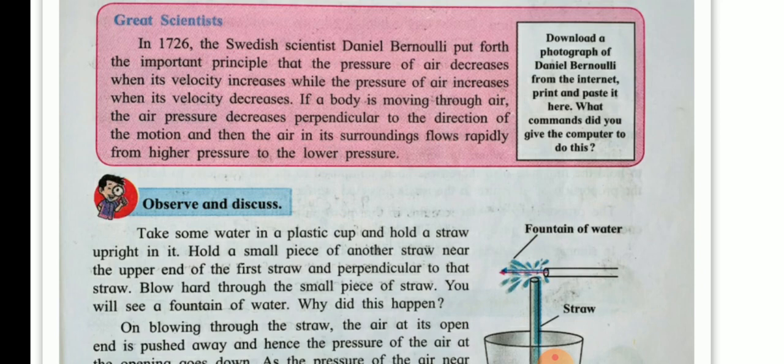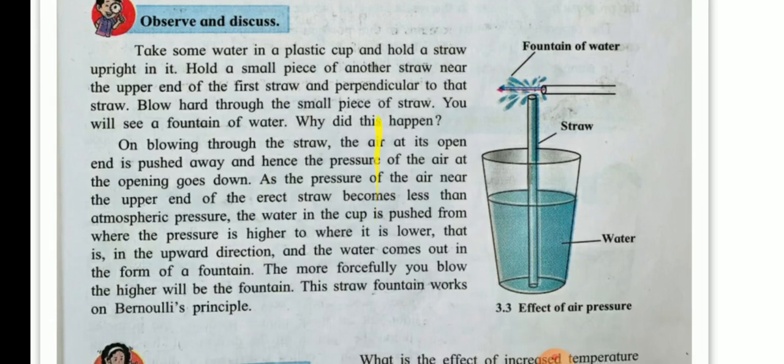Now let us observe and discuss. Take some water in a plastic cup and hold a straw upright in it. Hold a small piece of another straw near the upper end of the first straw and perpendicular to that straw. Blow hard through the small piece of straw. You will see a fountain of water. Why does this happen? On blowing through the straw, the air at its open end is pushed away and hence the pressure of the air at the opening goes down.